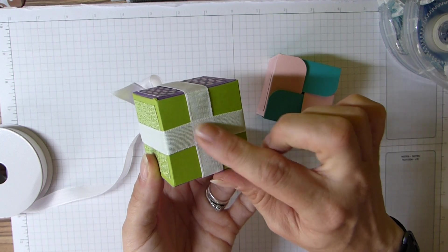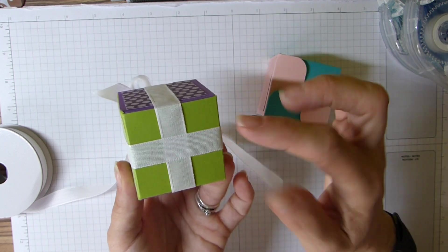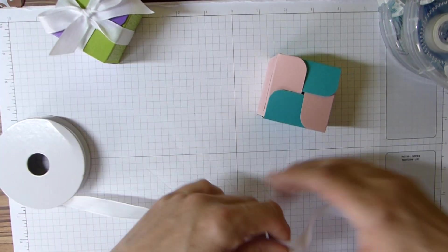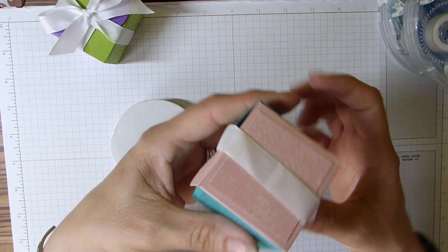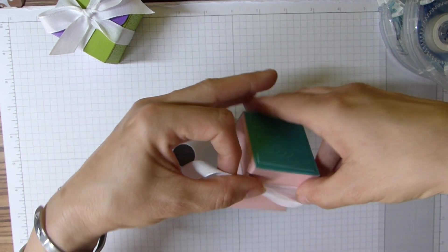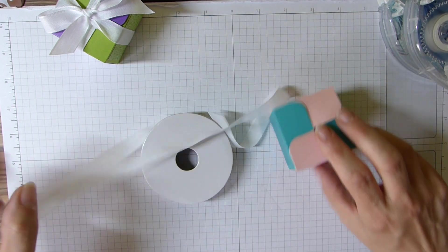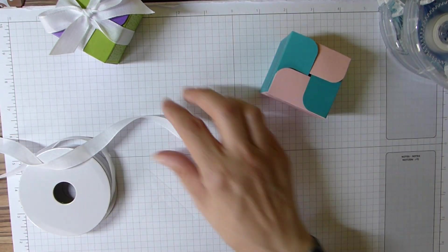I didn't want to have that crossover at the bottom, because you know how when you do the ribbon the normal way, you obviously end up with that bulky bit at the bottom and I didn't want that because obviously my box wouldn't sit straight.